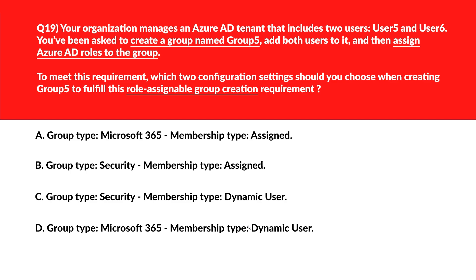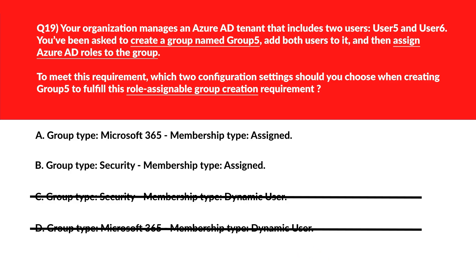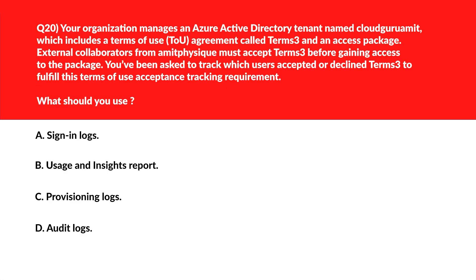Option D: Microsoft 365 groups with dynamic user membership cannot be used for Azure AD role assignments. Incorrect. Locking options A and B as the right choices.